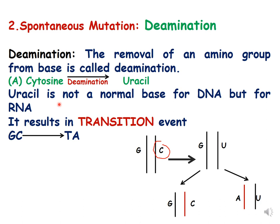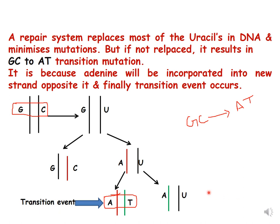Because of this deamination reaction, it also results in a transition event. The normal base is G-C, but this C has now converted to uracil due to deamination. When DNA replication occurs and the two strands separate, instead of bonding with G, the uracil will bond with adenine, because adenine is its normal bonding partner.